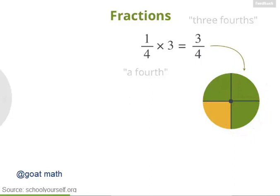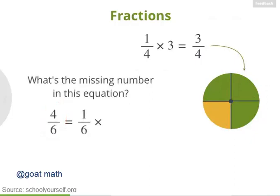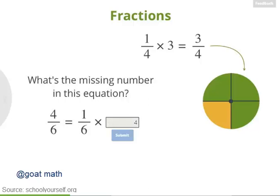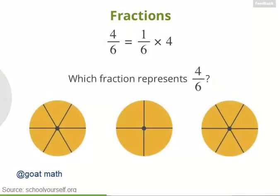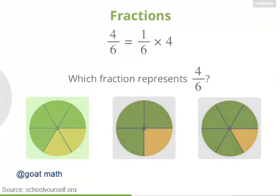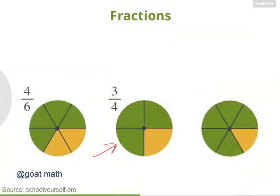Here's the fraction 4 sixths, meaning you're dividing 4 into 6 equal groups. You can think of it as starting with 1 sixth and multiplying by 4. So which of these diagrams represents 4 sixths? This one is 4 sixths, this fraction is 3 fourths, and this fraction is 5 sixths.